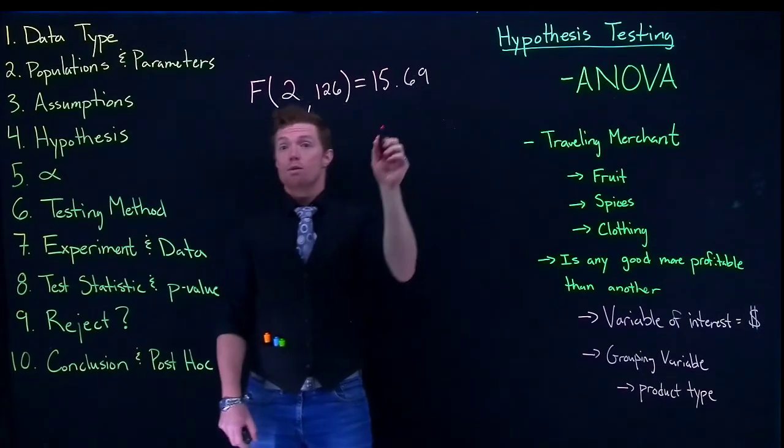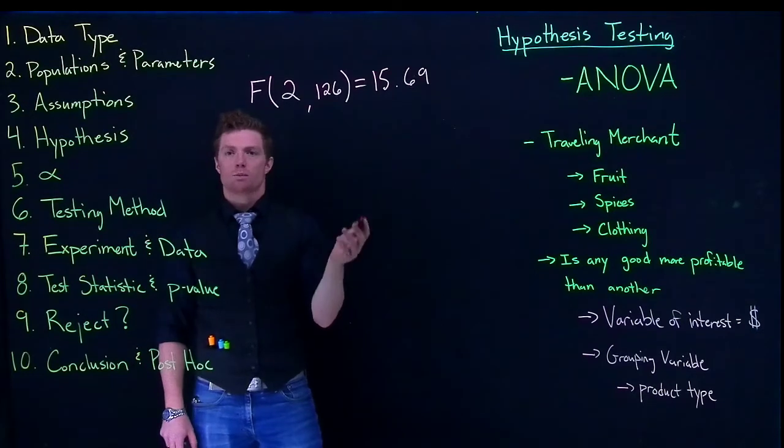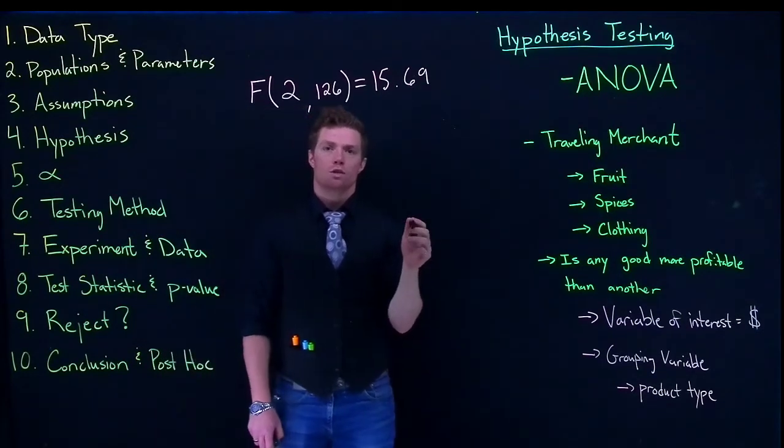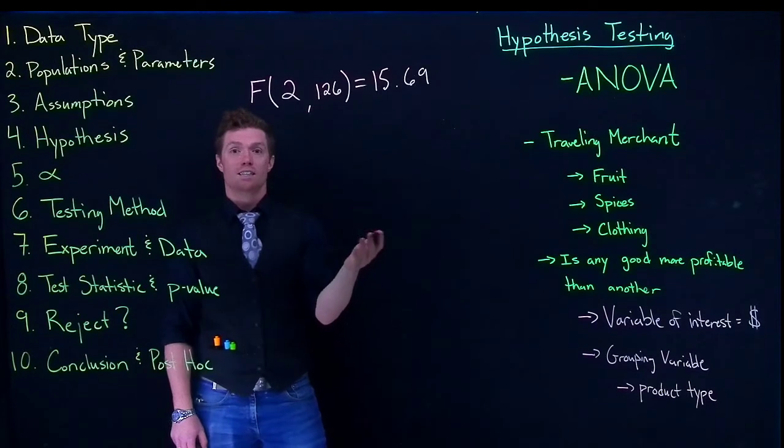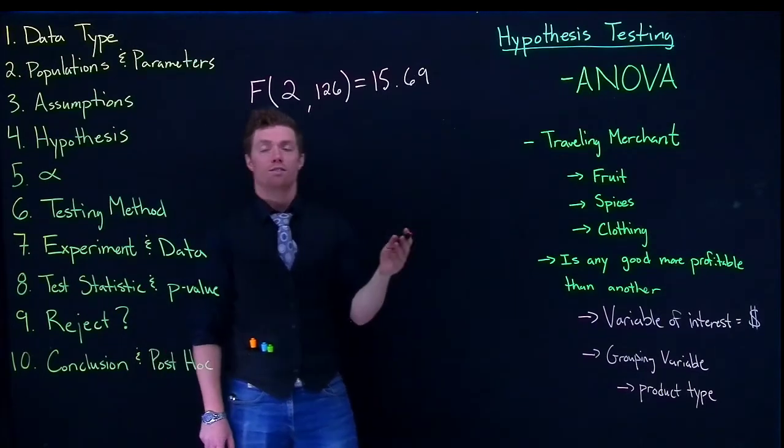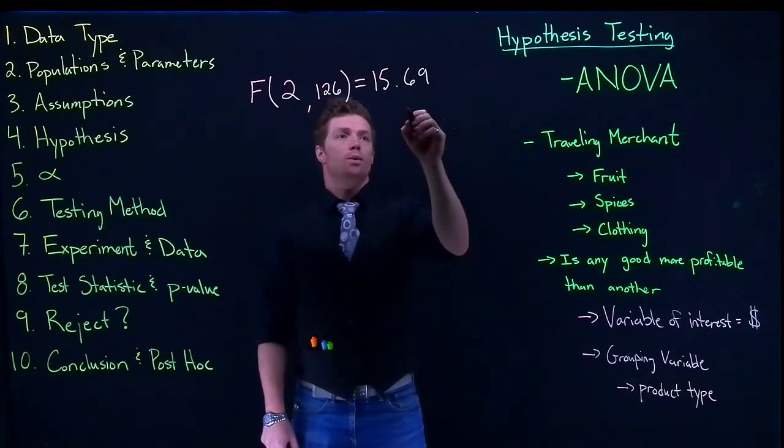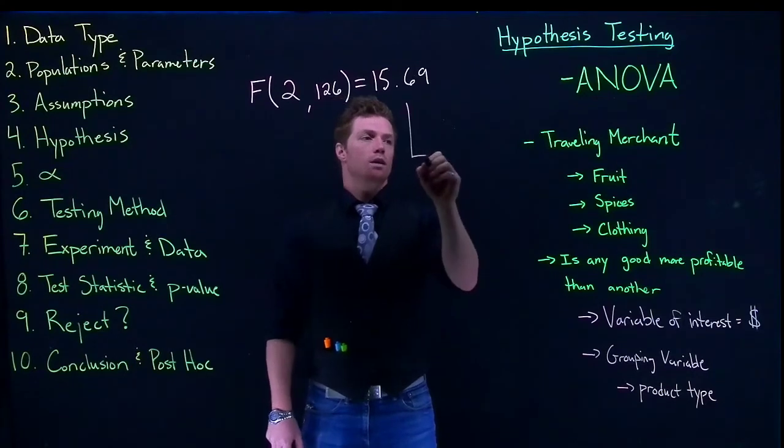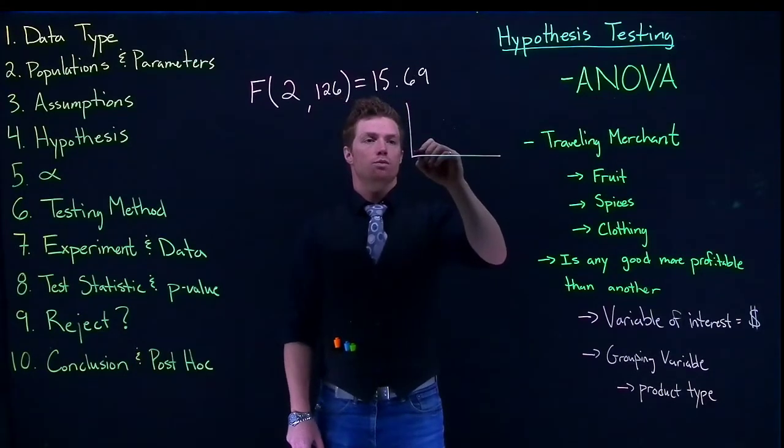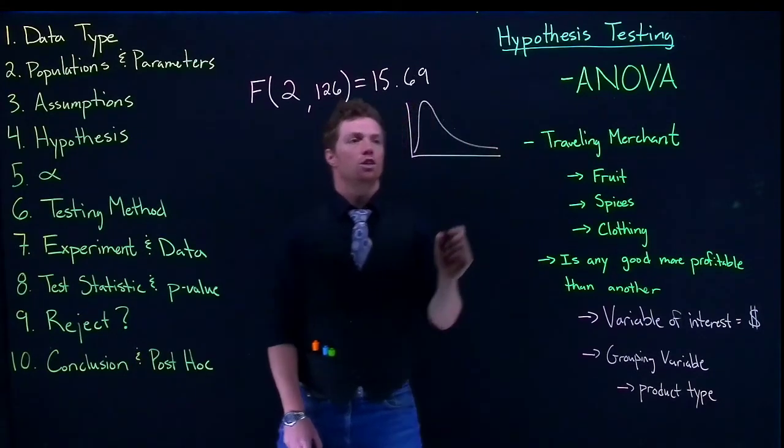Now this 15.69 is not the same interpretation that we had when we were using a t distribution or when we were doing a z distribution where that was like the number of standard deviations away from the mean. And the reason why that's not the case anymore is because our distribution looks really skewed.